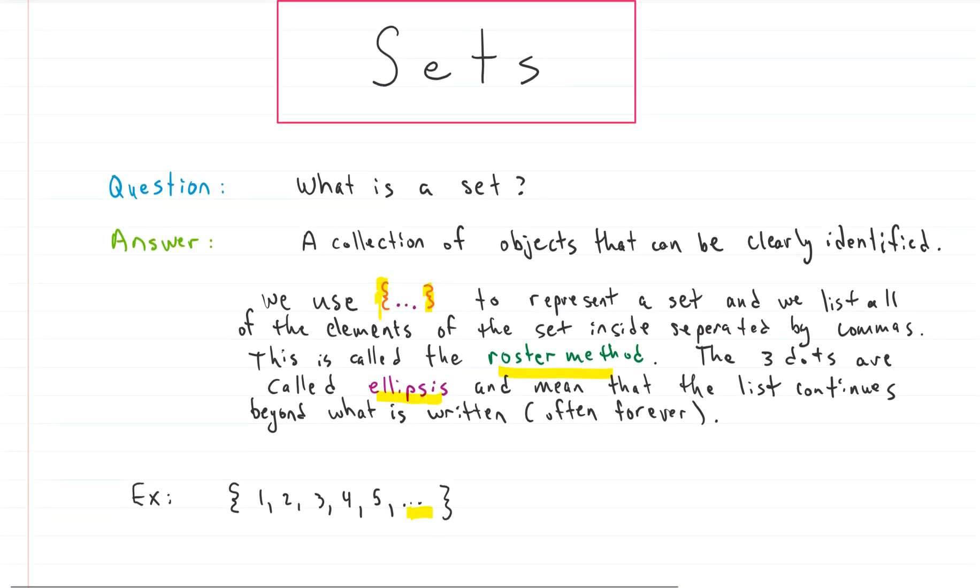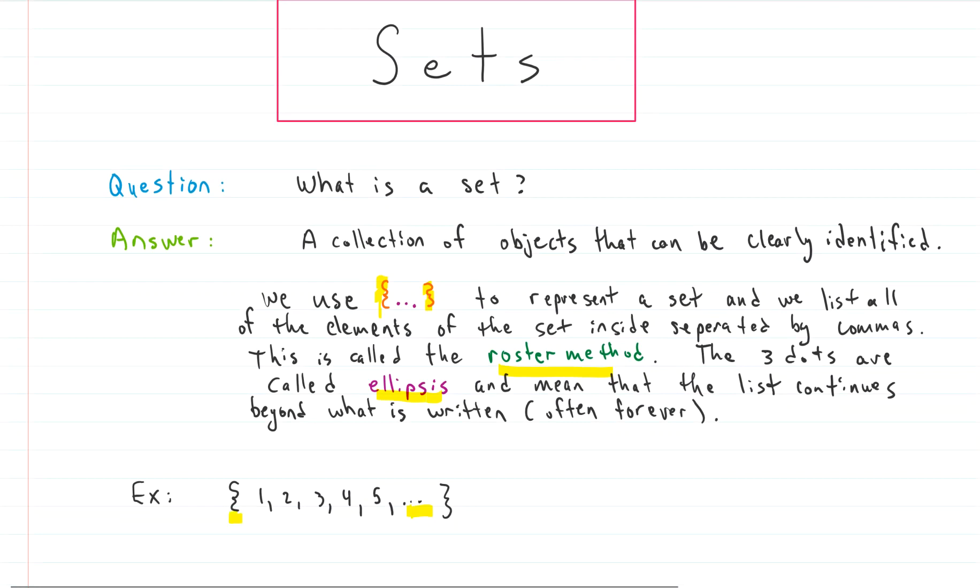So for an example, we have a set. We know it's a set because we have the curly brackets. And inside of the set we have 1, 2, 3, 4, 5, and then we have the ellipsis, which means it keeps going on from there forever in this case. So that would be the set of counting numbers.